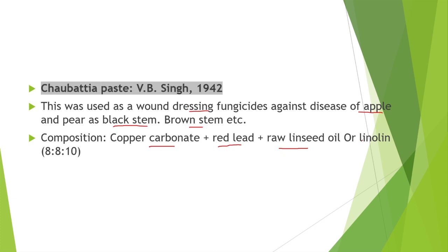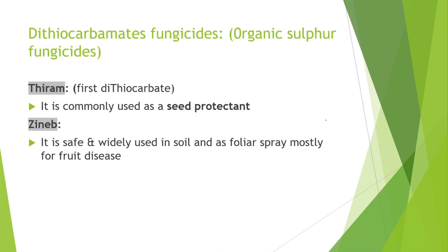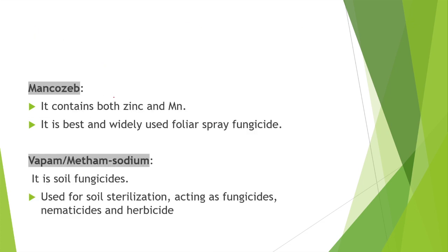Next group is Dithiocarbamate fungicides, an organic sulfur fungicide. Examples include thiram, commonly used as a seed protectant and for seed treatment, foliar spray mostly for fruit diseases; and mancozeb, which contains both zinc and manganese and is widely used for foliar spray.